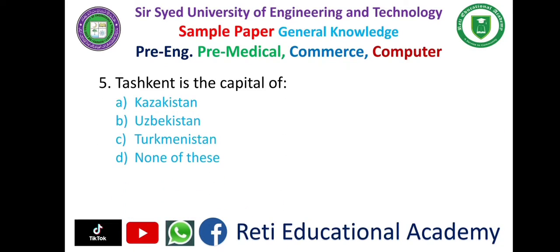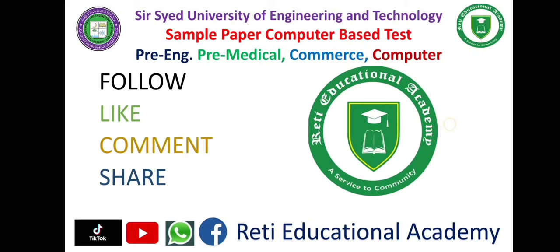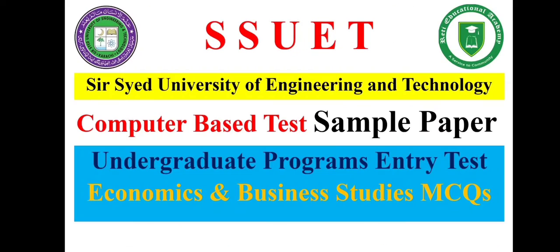Question number five: Tashkent is the capital of — A) Kazakhstan, B) Uzbekistan, C) Turkmenistan, D) None of these. The correct answer is B, Uzbekistan.